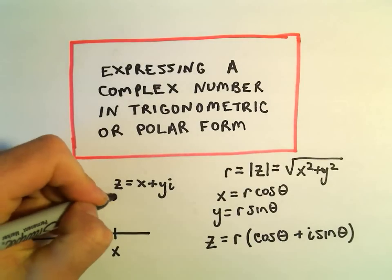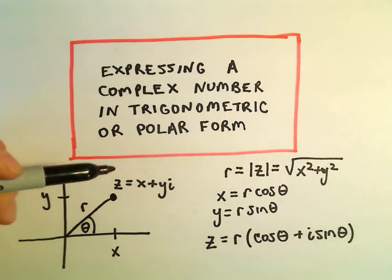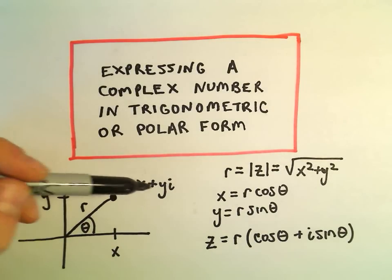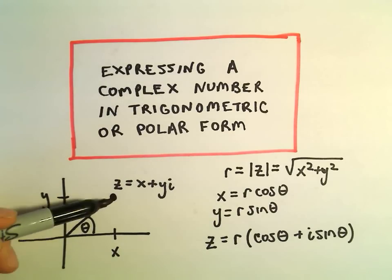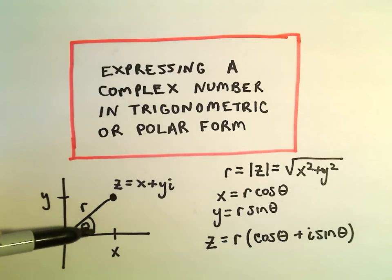And the idea is, we've got some complex number z. We can write that as x plus yi if the real part is x and the imaginary part is y. So this complex number, we can make an angle with the positive x-axis, and that'll simply be our angle theta.